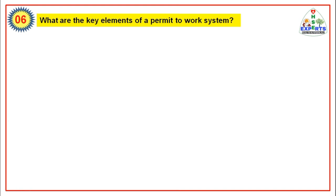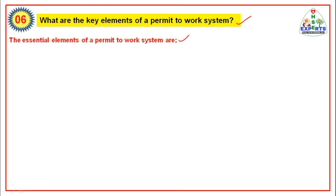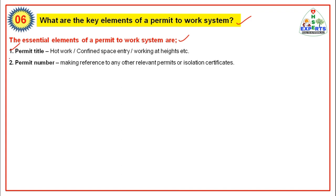Question 6: What are the key elements of a permit to work system? Or the interviewer may ask: what are the sections in a permit to work system? Every organization has its own permit to work system, but here are sections common to every permit to work system. The essential elements include: permit title — which may be hot work, confined space entry, working at height, spark potential, or critical work as per the organization; and permit number — every permit has a different specific number.